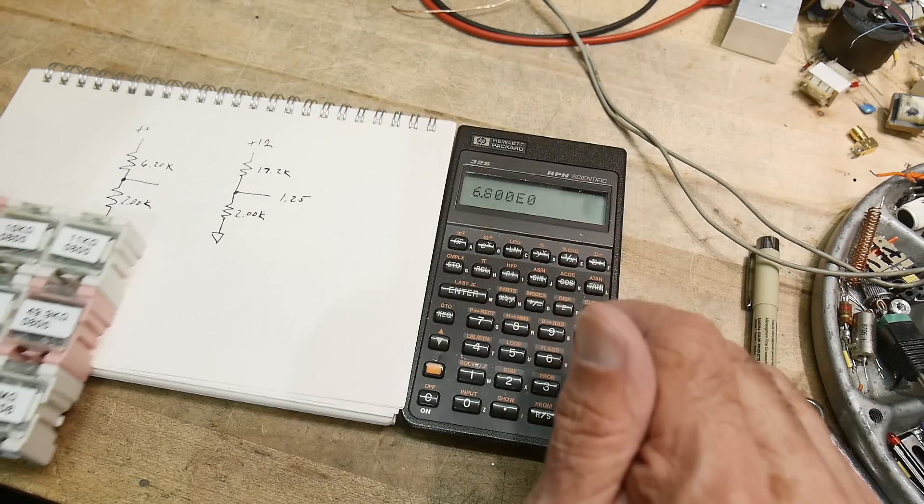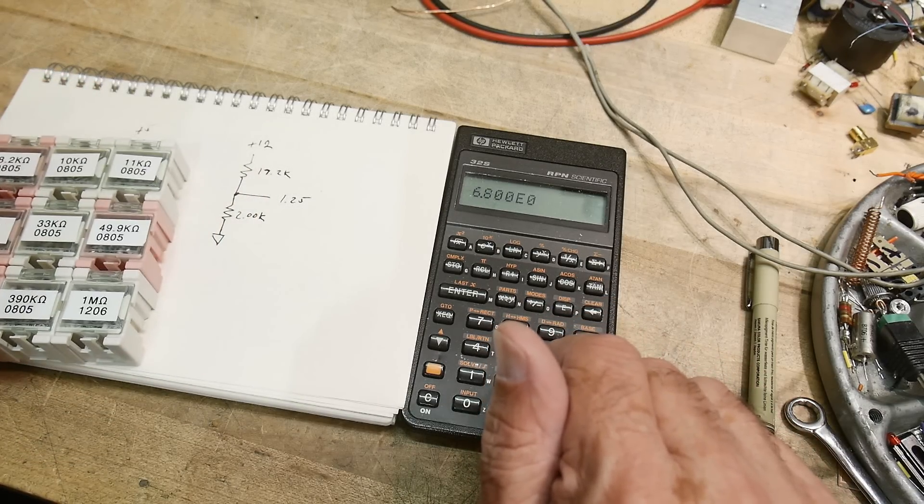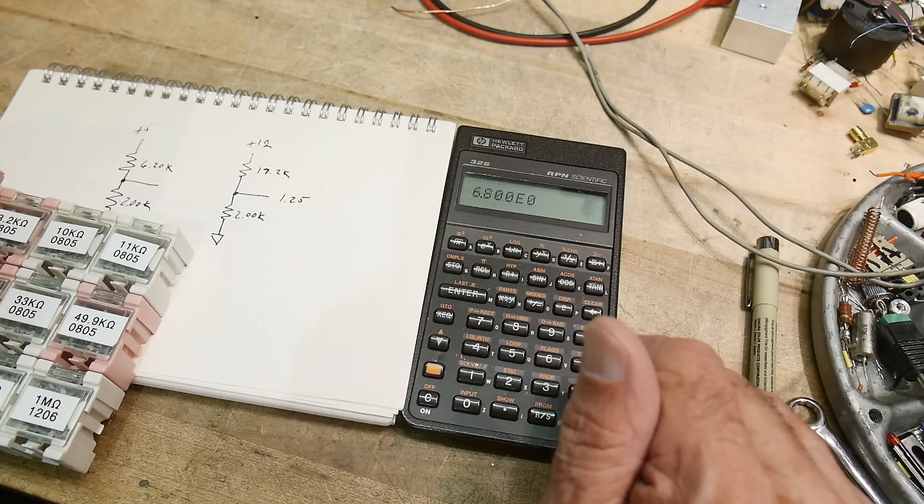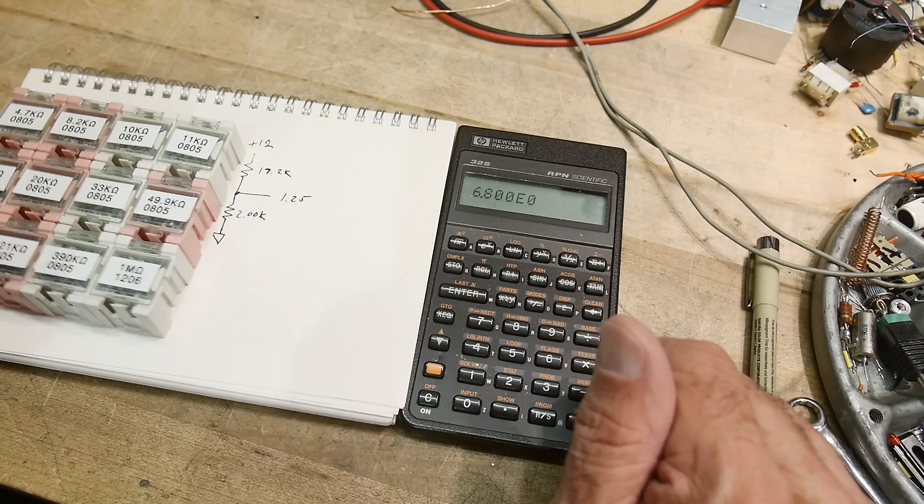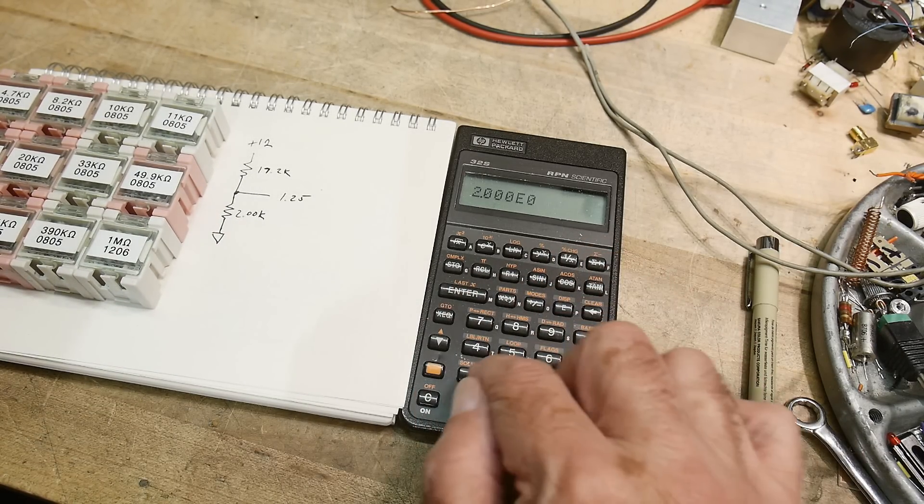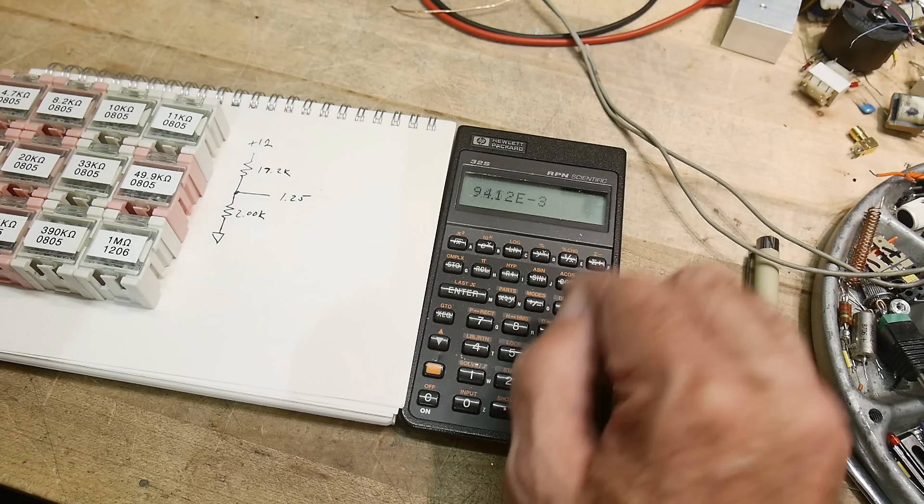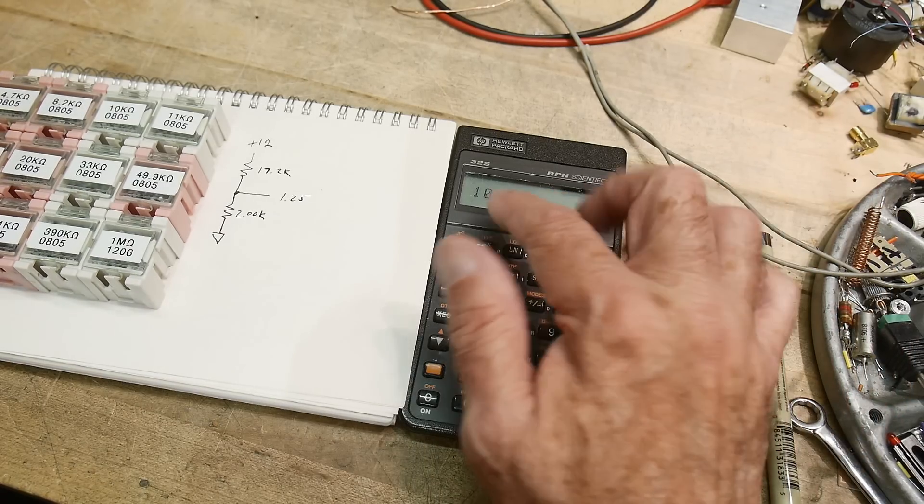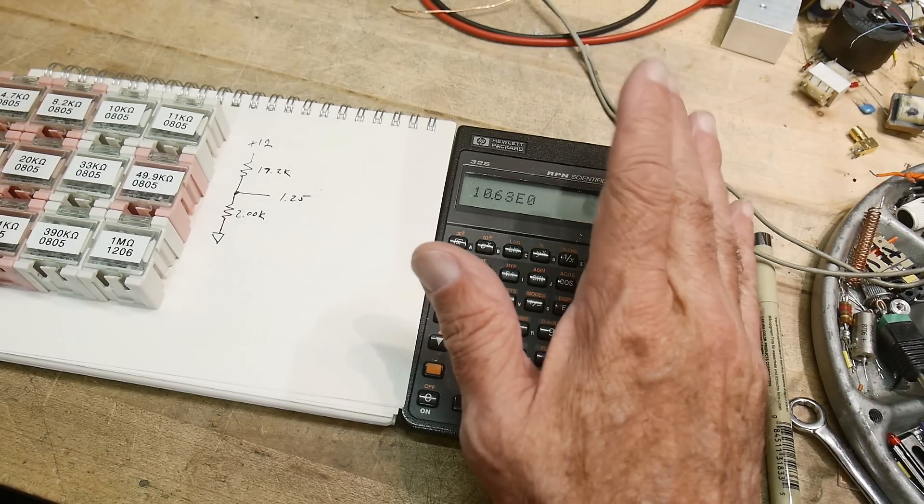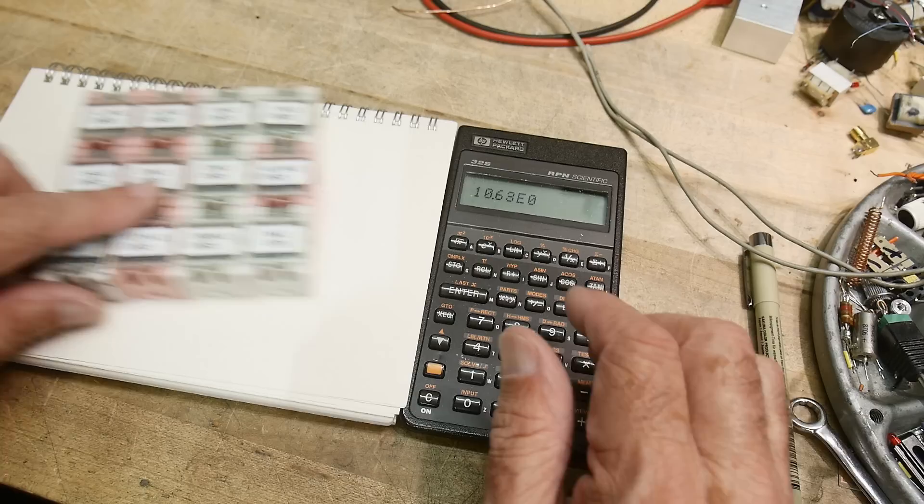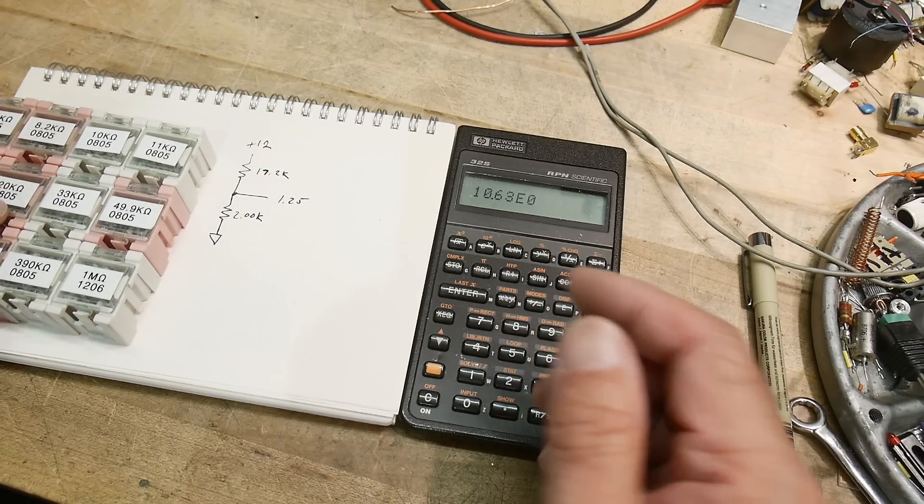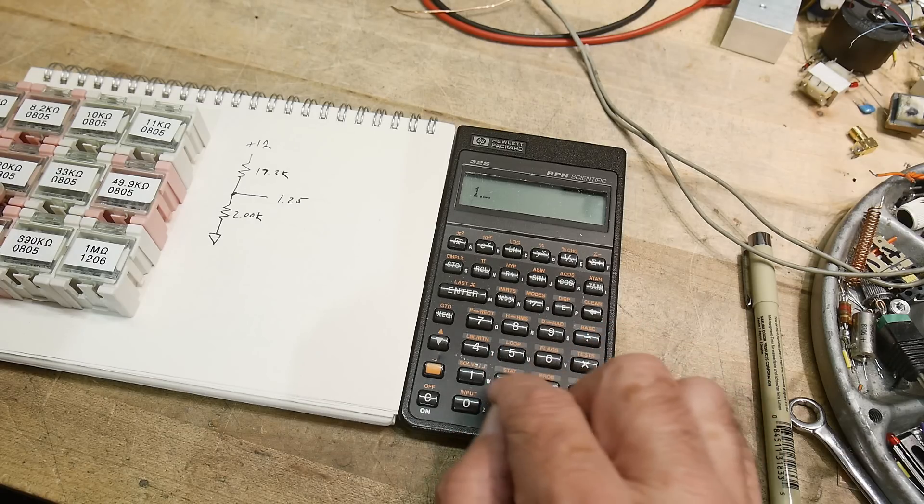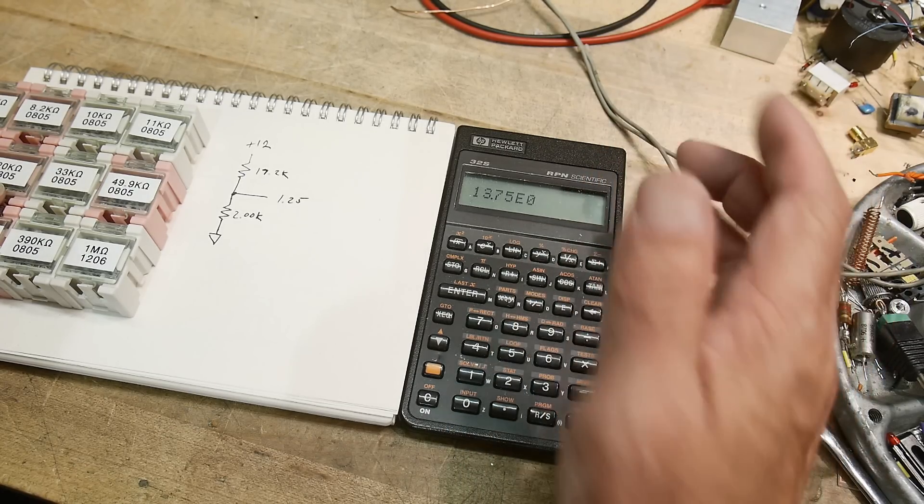So 2 and 15k would be 17 and would get 6.8. Oh, it only goes up to 6.8, that's not good. Let's try 20. Wait, that's not right. What did I say? 15 to 17? Oh there we go, 10.63. I must have typed it wrong. It would give me 10.6, that's not too good.